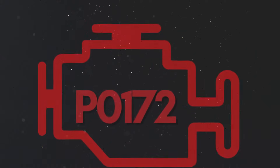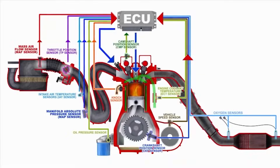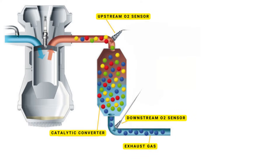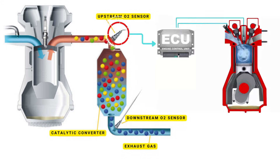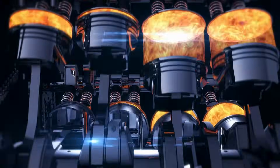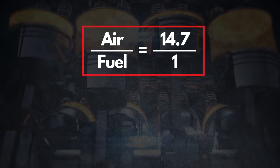Now let's dive into the details of why P0172 gets triggered. To understand this, we need to talk about how your car's engine monitors and controls the air-fuel mixture. In a fully functional system, the upstream oxygen sensor measures the amount of oxygen in the exhaust gases as they leave the engine. This real-time data helps the PCM adjust the air-fuel mixture for optimal performance. For gasoline engines, the ideal air-fuel ratio is 14.7 parts air to one part fuel.